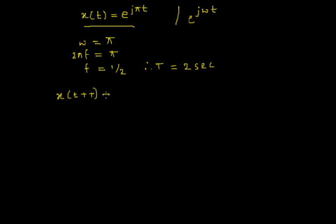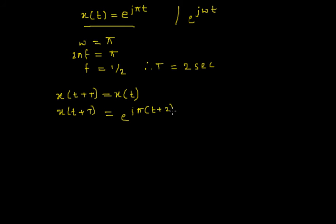Now the task is to determine whether this signal is periodic or not. For that, we'll consider the condition: X(t + T) must be equal to X(t). So we'll evaluate X(t + T) where capital T is 2. Since X(t) is e to the power jπt, we replace t with t plus 2 and expand the term.